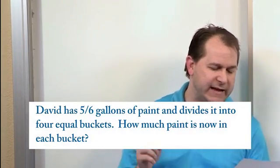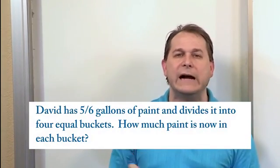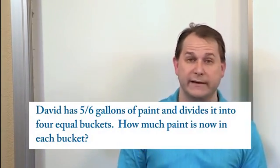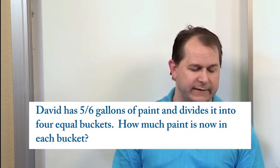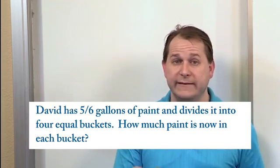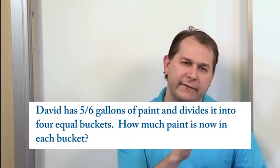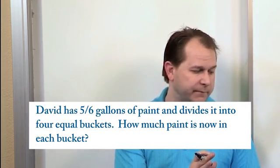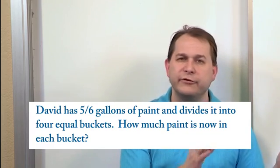Now the next problem says that David has five sixths gallons of paint and he divides it into four equal buckets. How much paint is in each bucket? So again, it doesn't tell you to divide these numbers, but you know that you have so much paint, five sixths of a gallon, which is almost a gallon, and you're dividing it.